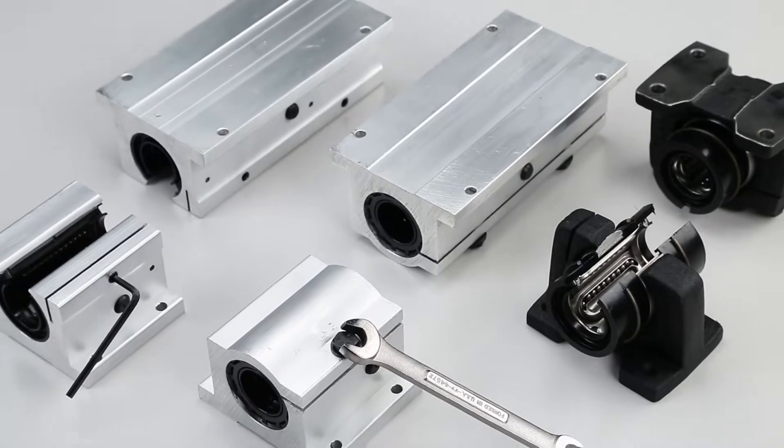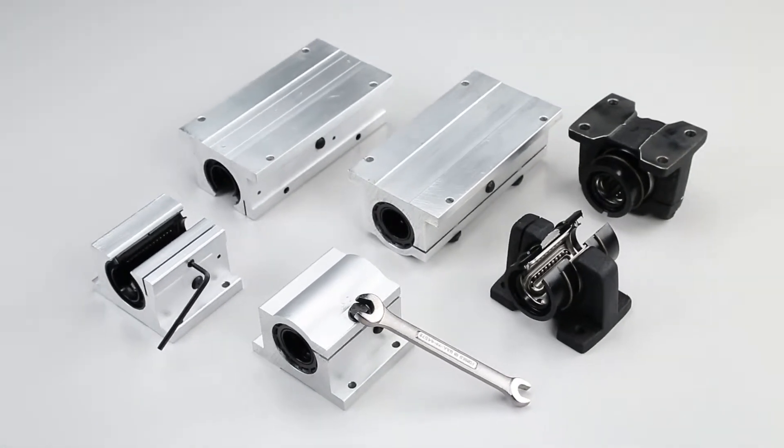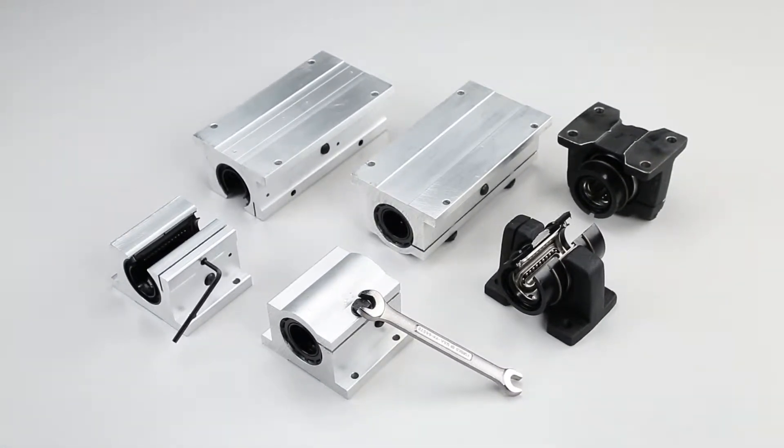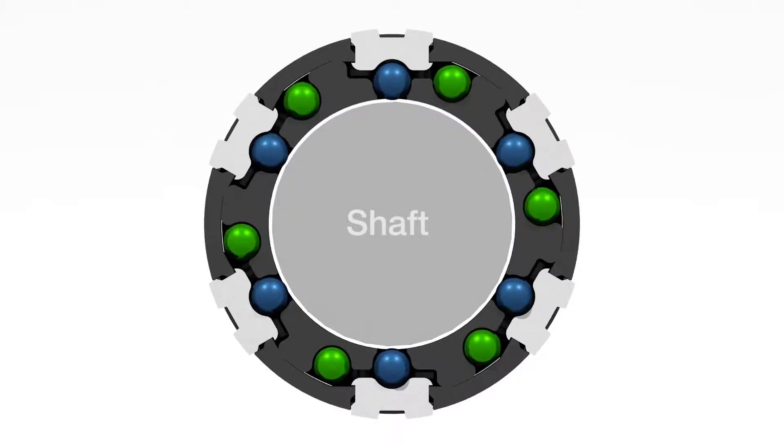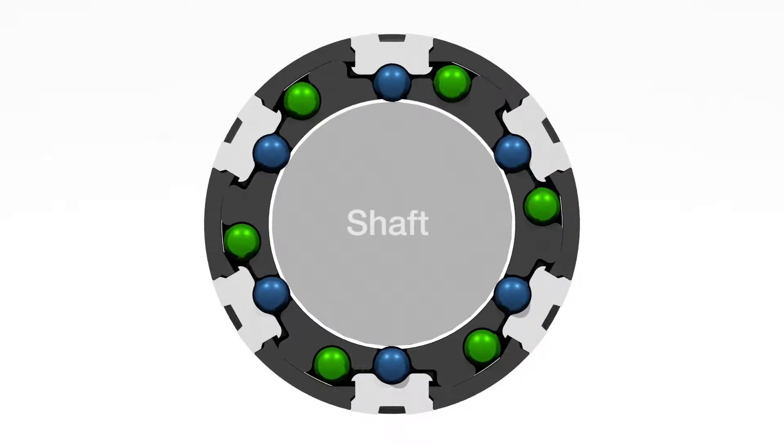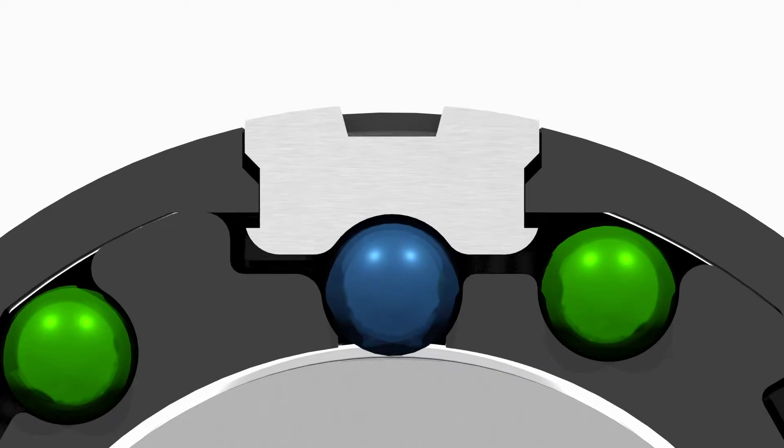In some linear applications, higher precision can be achieved by removing the play or lash in the linear guide. Removing the lash can be done through the use of adjustable pillow blocks. These have an adjustable inside diameter to change the clearance between the shaft and the linear ball bushing bearing, making it possible to obtain zero play or slight preload fits.